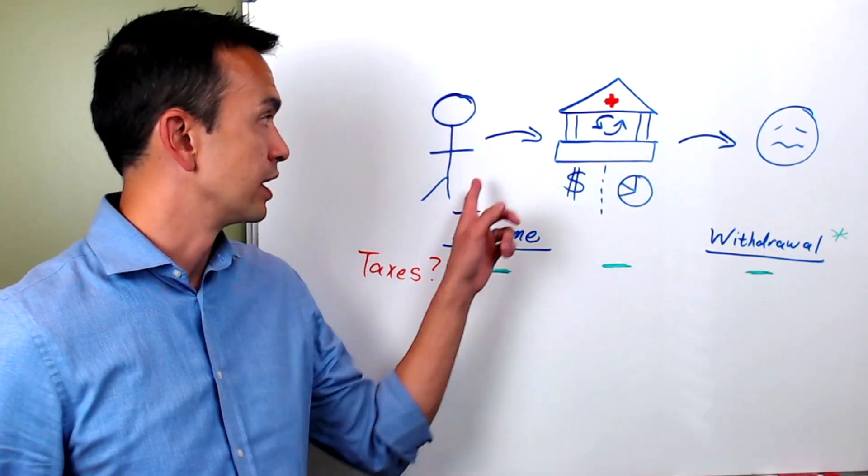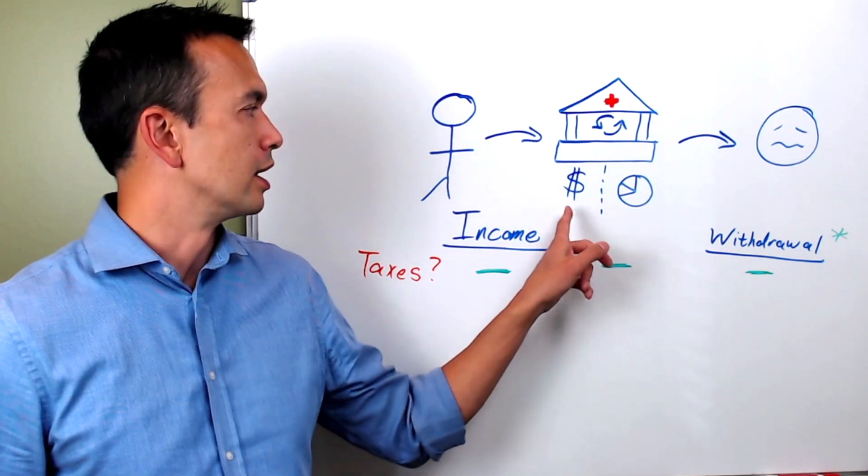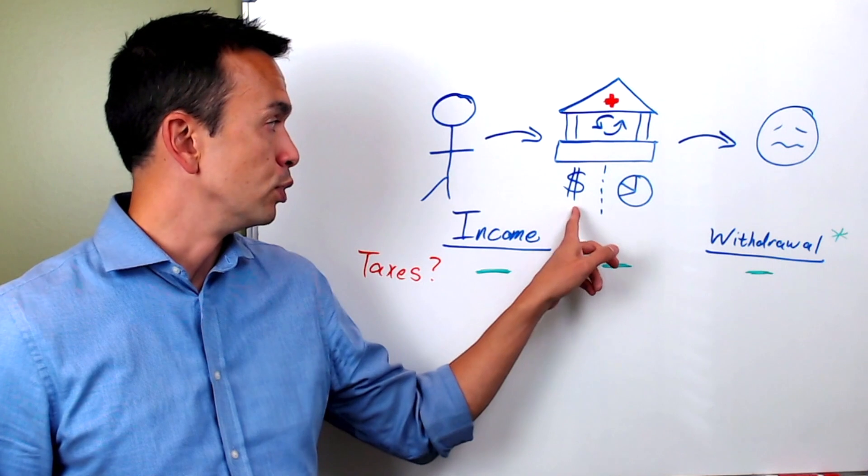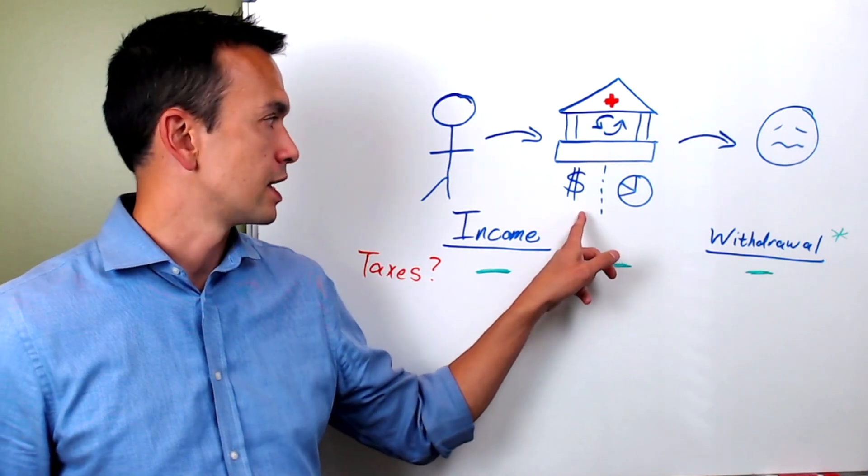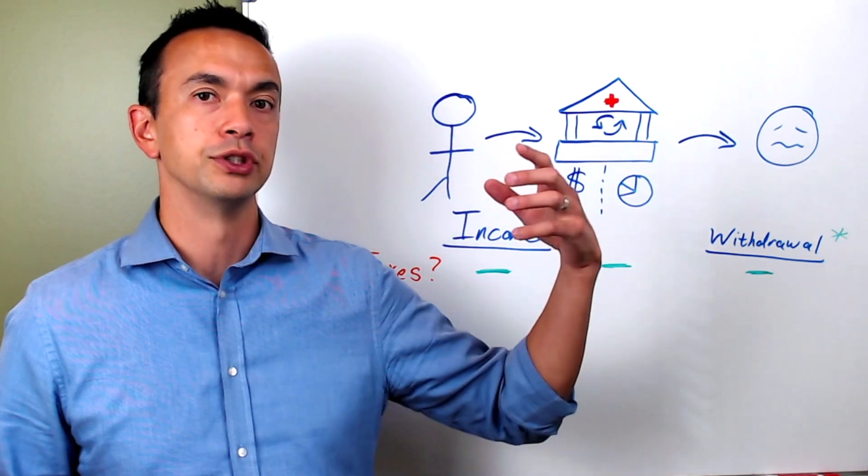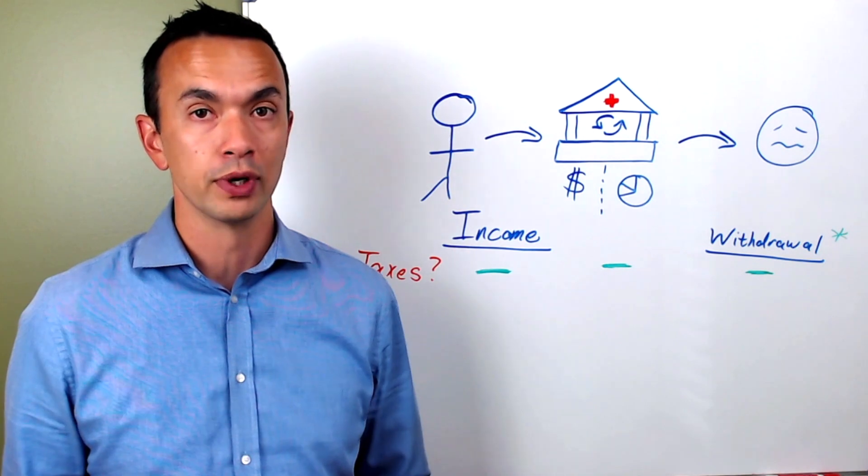Whenever you first put money into an HSA, it's going to go into this checking account part, but you can also elect to move some of the money from this side into the investment side, and from that you can choose different mutual funds that are available, similar to what you would see inside of your 401k.